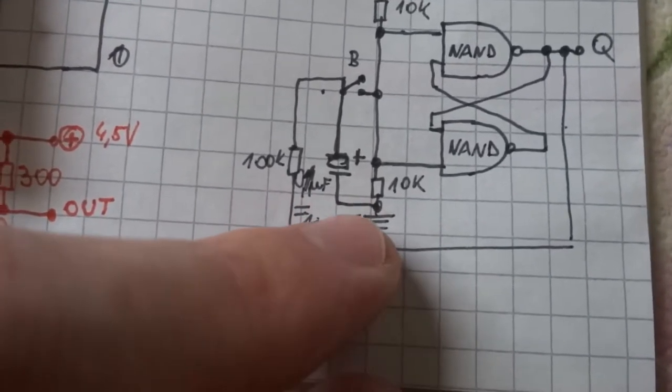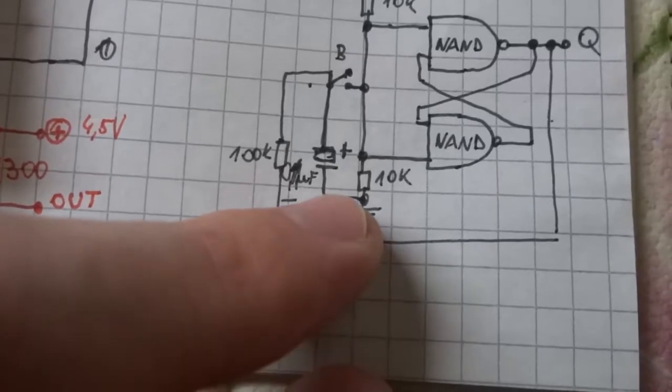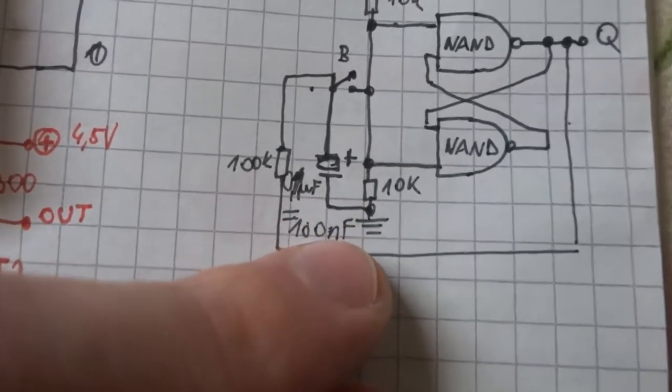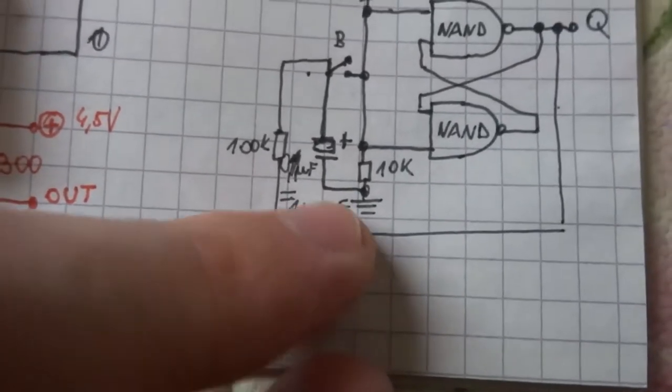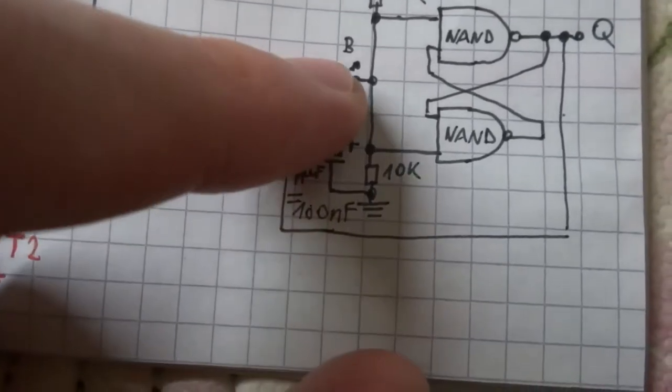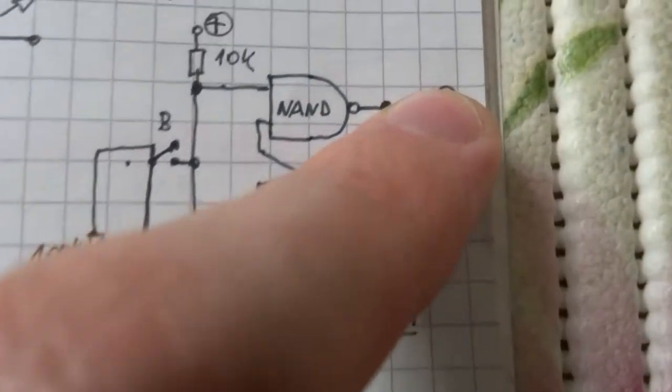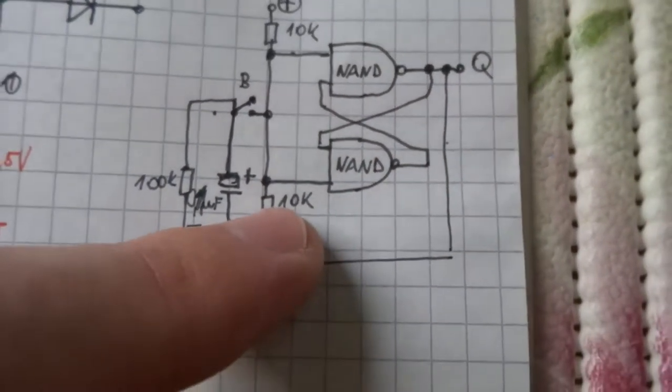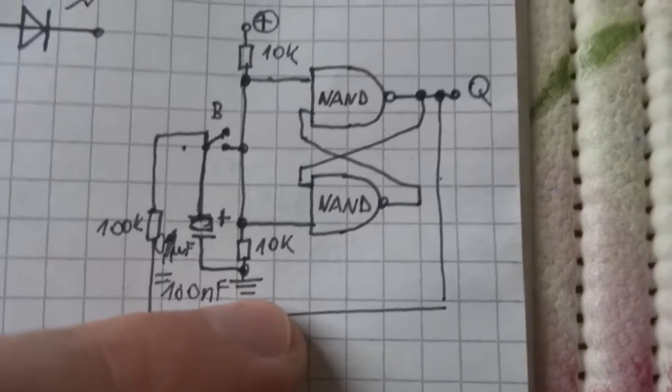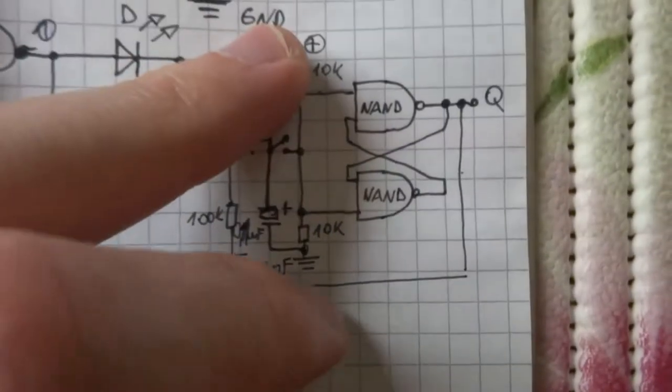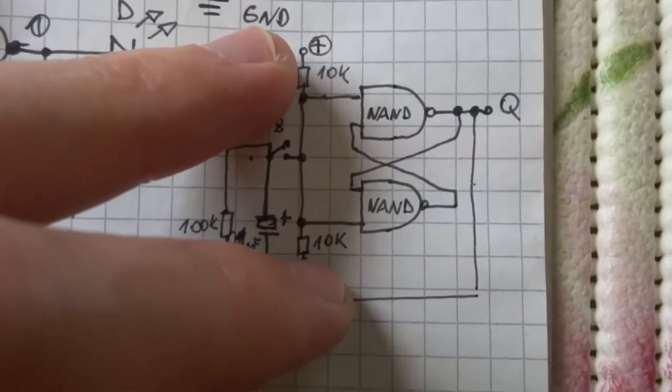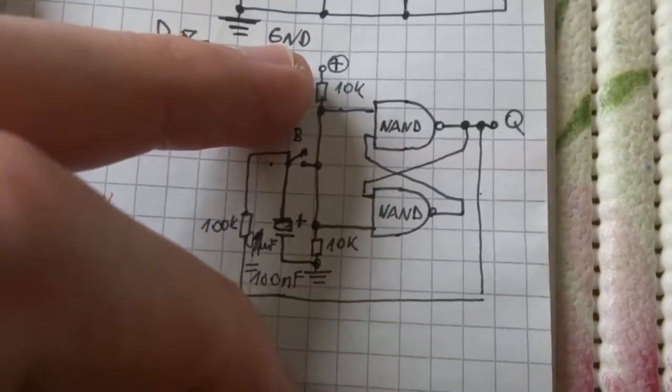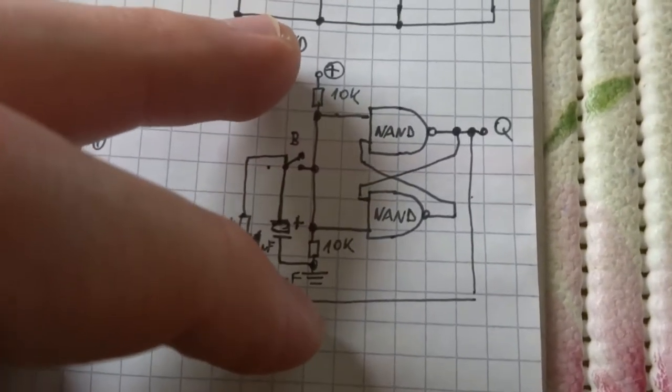So this is 100kΩ to this output Q and 10kΩ to ground. This 10kΩ is on positive current and 10kΩ is for ground.